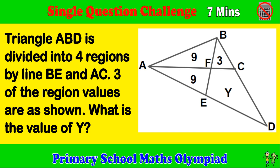Triangle ABD is divided into 4 regions by line BE and AC. Three of the region values are as shown. What is the value of Y?